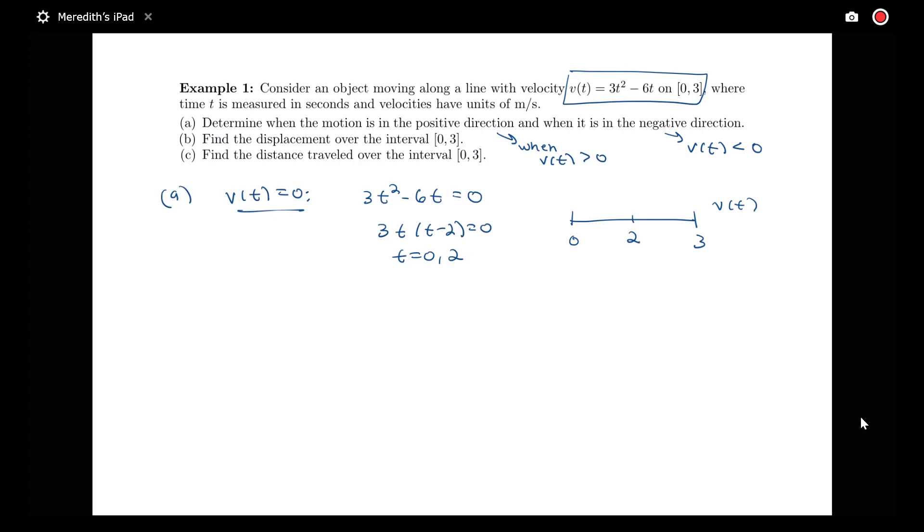If I plug in something between 0 and 2, like 1, I'll have (1 - 2) which is negative, and 3t will be positive, so the velocity would be negative. Plugging in something between 2 and 3, we see that velocity will be positive. So v(t) < 0 for t in (0,2), not including 0 and 2 where it equals zero, and velocity is positive for t in (2,3).